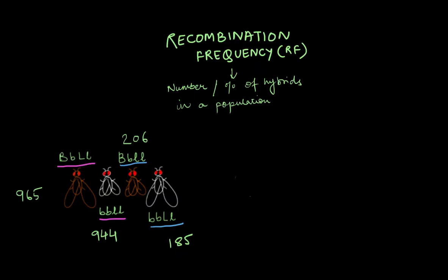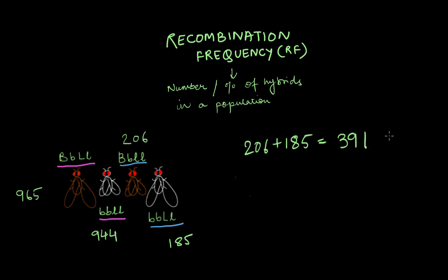Now, how will RF help us figure out the degree of linkage and map out an entire chromosome? From Morgan's cross we have the four types of offspring and their exact numbers. To calculate RF, we find the percentage of hybrids in the cross. The first thing we do is add up the total number of hybrids — the ones marked in blue — which gives us 391.